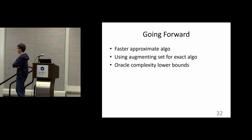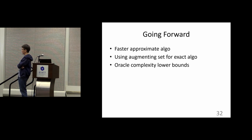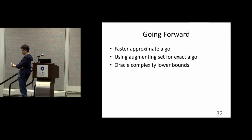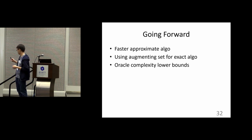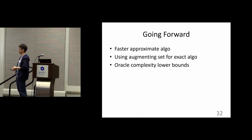To conclude: we have given a new augmenting set algorithm for approximate matroid intersection. Natural open questions include whether we can do better, whether augmenting sets can also help for the exact algorithm, and finally whether we can prove any non-trivial lower bound for matroid intersection.